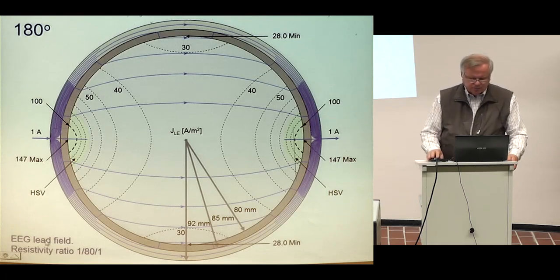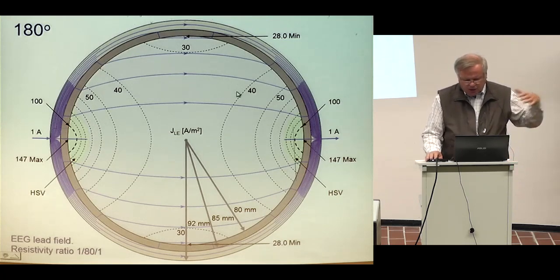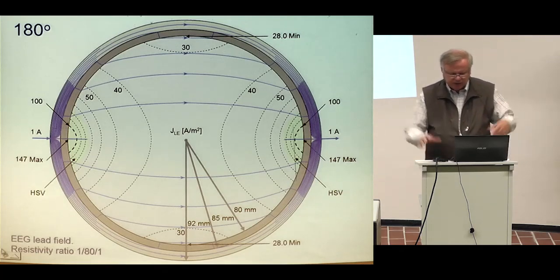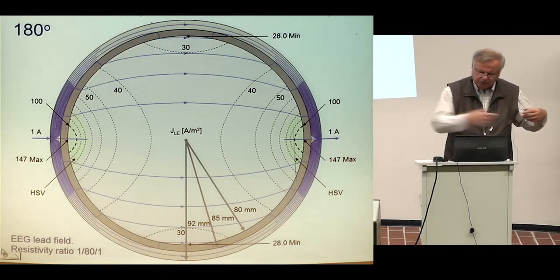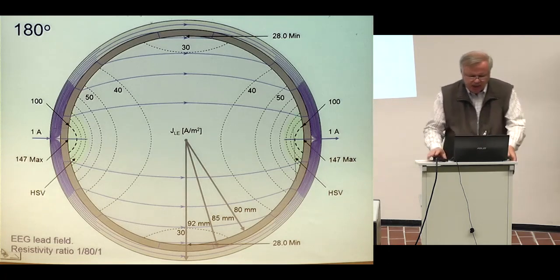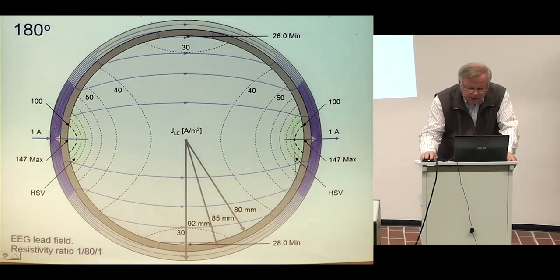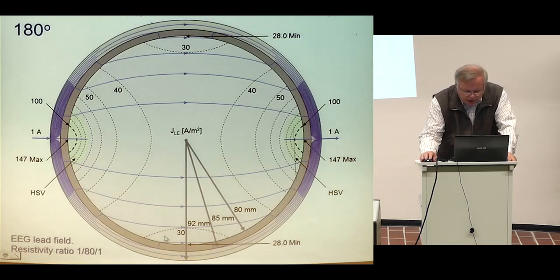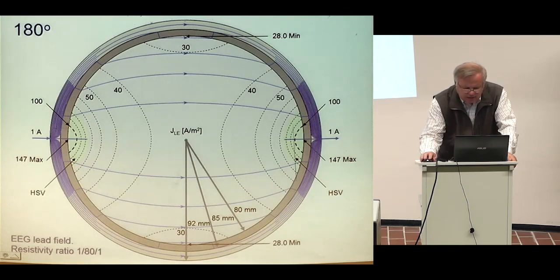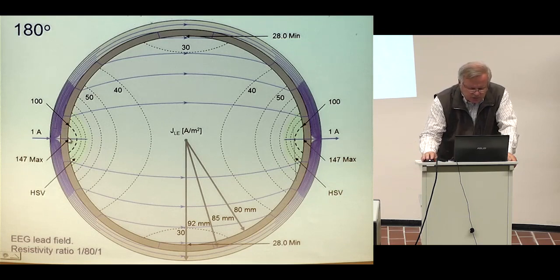Secondly, the measurement sensitivity is oriented horizontally — in the direction of the axis between the electrodes. In the center of the brain the measurement sensitivity is about 30, plus or minus something, which is low. But just under the electrodes it is five times stronger.